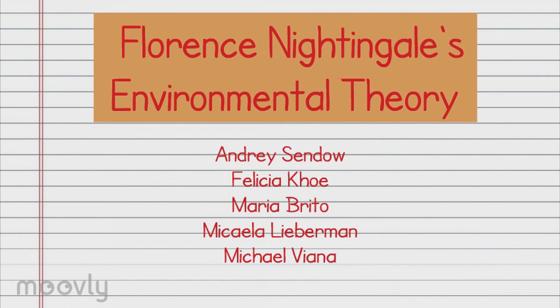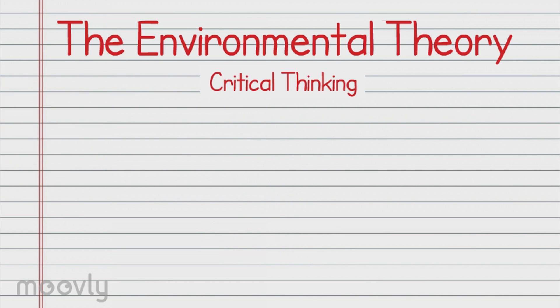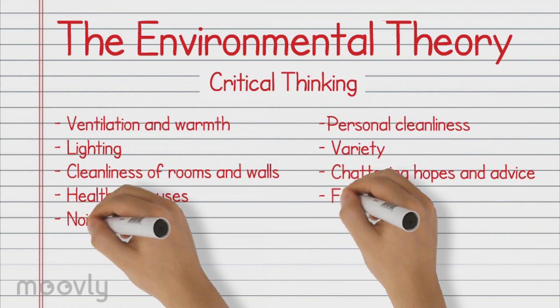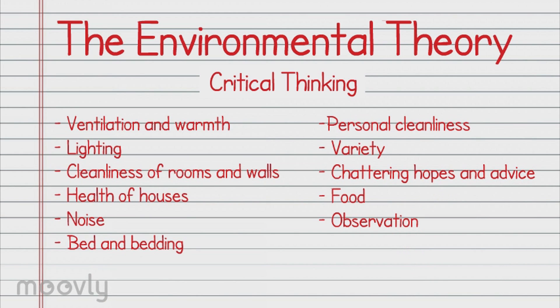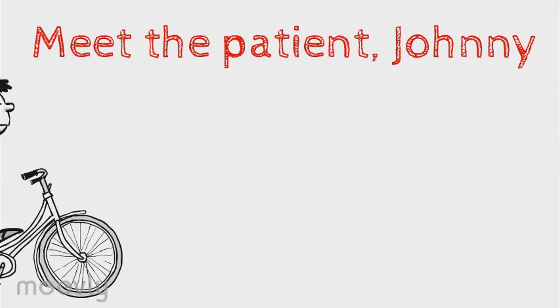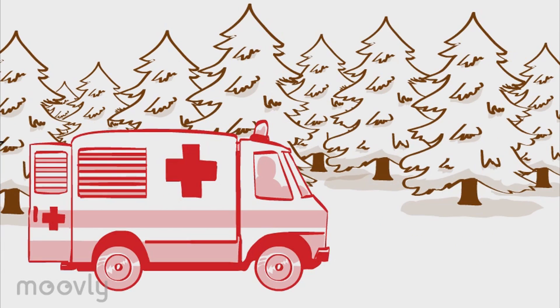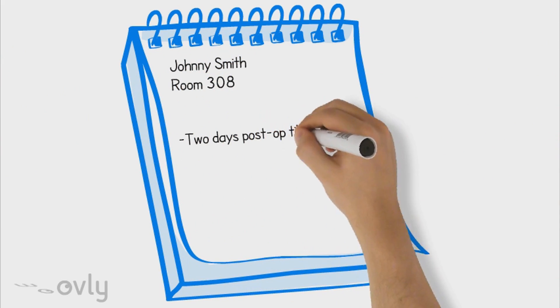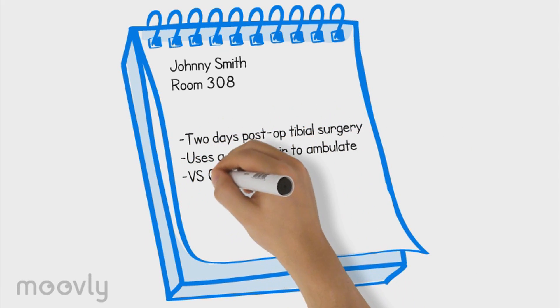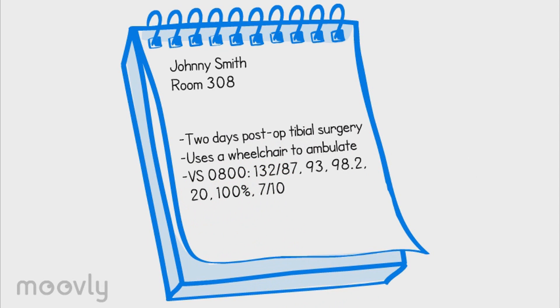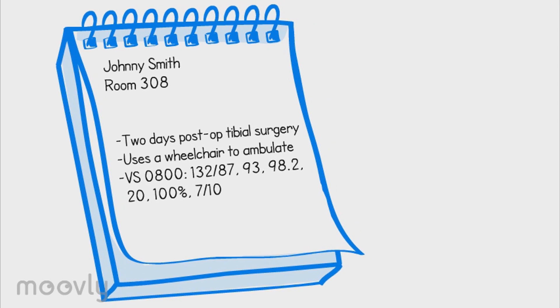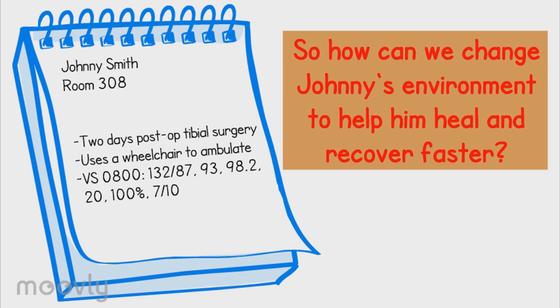We chose to do our project on Florence Nightingale's environmental theory. This theory has 11 environmental factors that we will discuss in detail later on in this video. First, let's meet our patient, Johnny. Johnny is 16 years old and he loves to go mountain biking. Unfortunately, he was injured in a bike accident and was taken to the hospital for an emergency tubule surgery. Thankfully, his surgery was a success. He is now two days post-op and uses a wheelchair to ambulate. Currently, his vitals are 132 over 87, 93, 98.2, 20, 100% on room air, and 7 out of 10 per pain. So how can we change the environmental factors to help Johnny heal and recover faster?